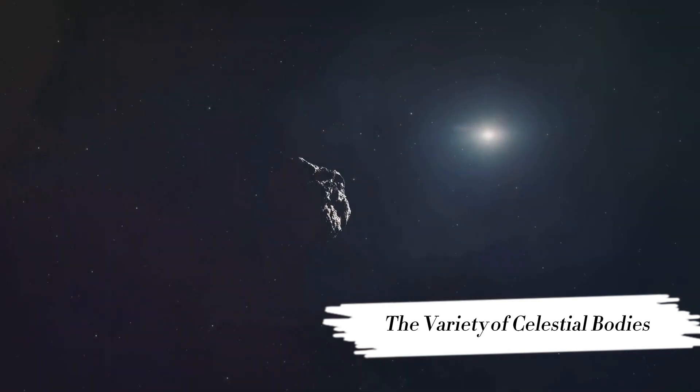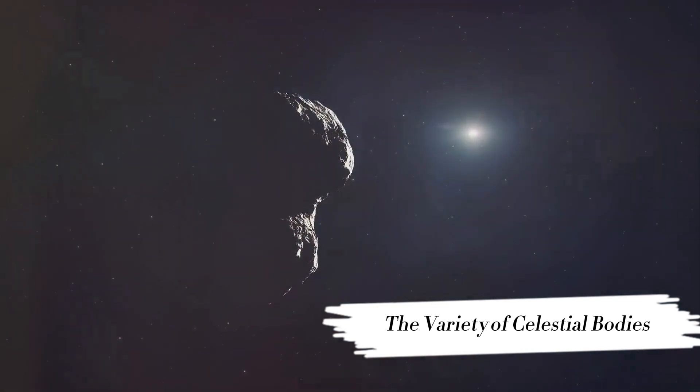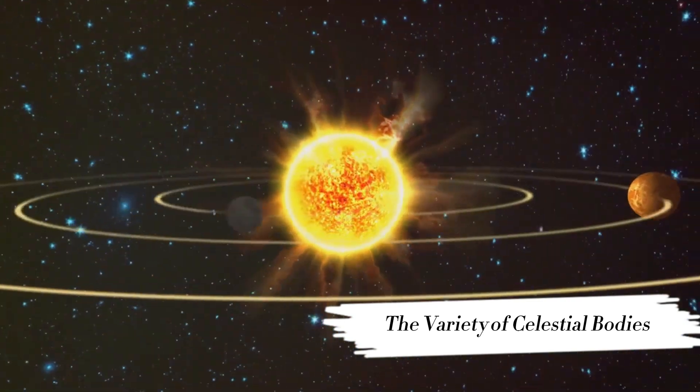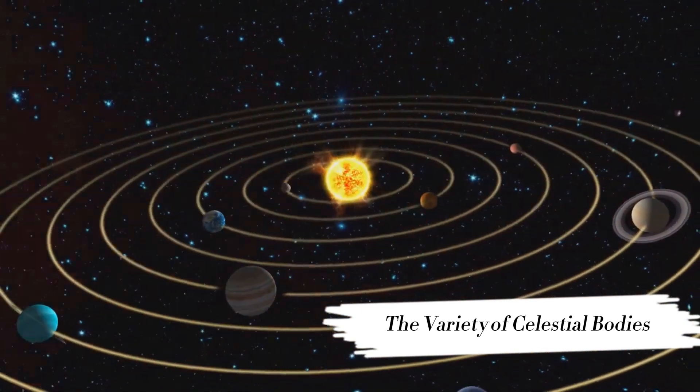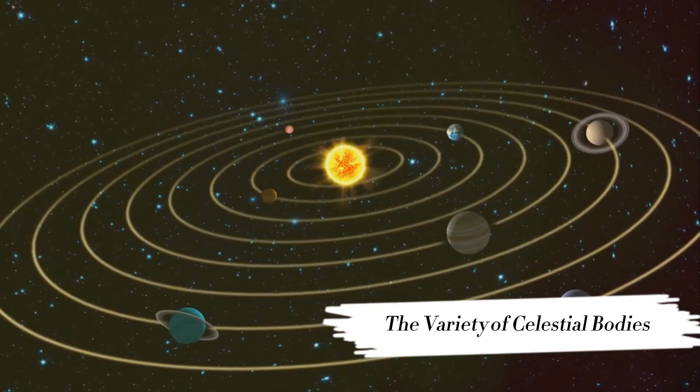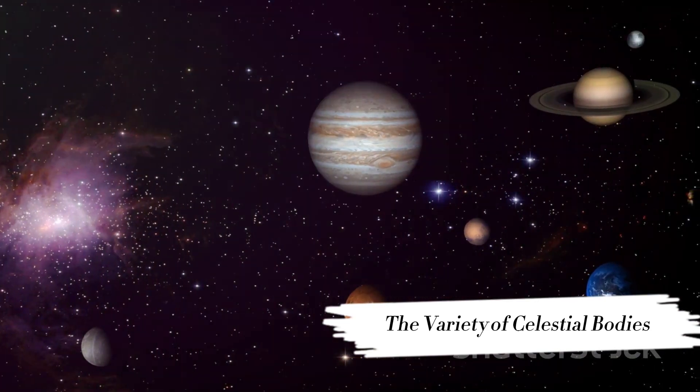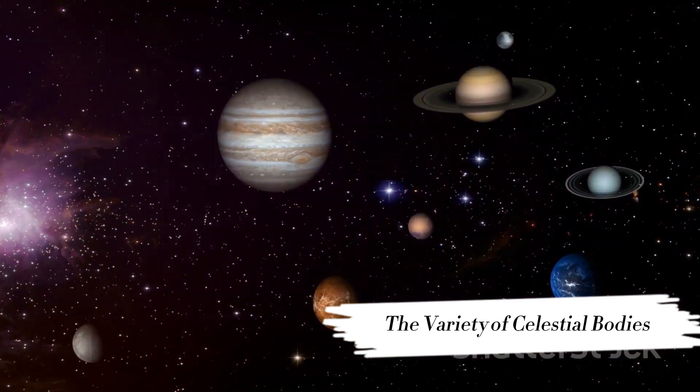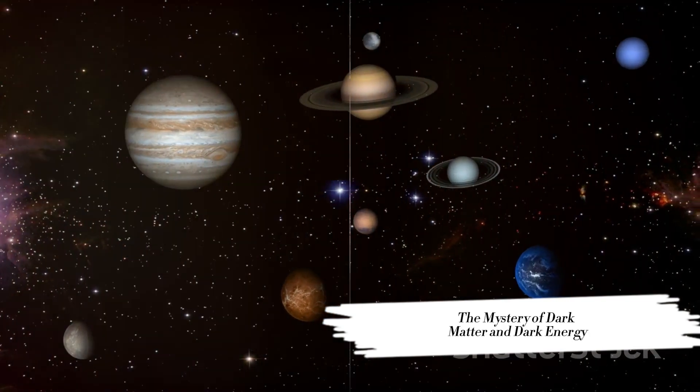But this isn't all. There are comets streaking across the sky, nebulae, the stellar nurseries where stars are born, and pulsars, the rapidly rotating remnants of exploded stars. Each celestial body with its unique characteristics plays a distinct role in the grand cosmic dance. The universe is not just a collection of celestial bodies, it's a symphony, with every star, galaxy, planet, asteroid, and black hole contributing to the cosmic melody. The diverse celestial bodies make the universe a grand spectacle of cosmic wonders.